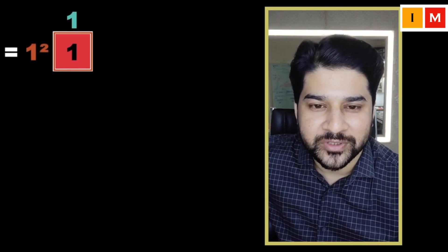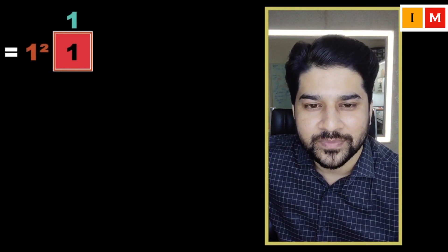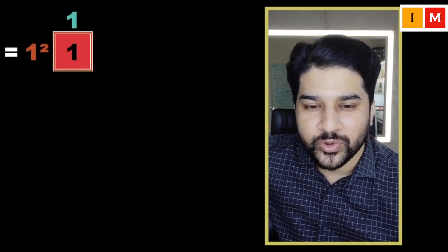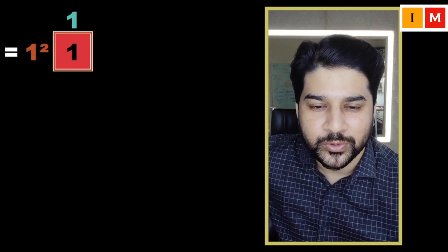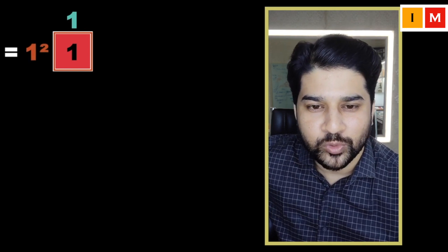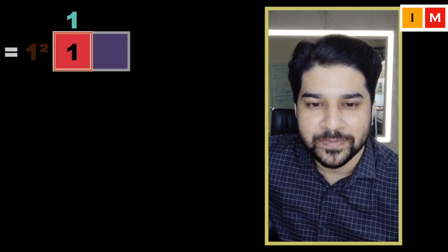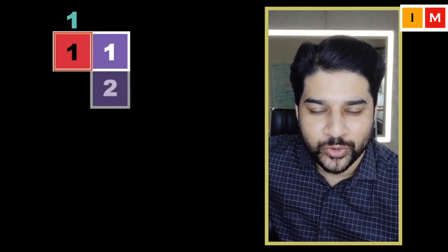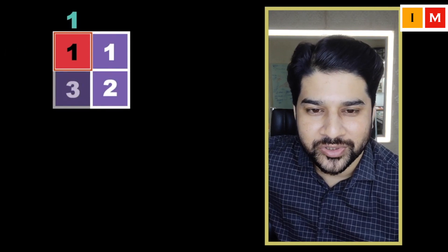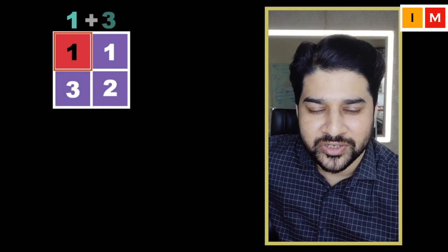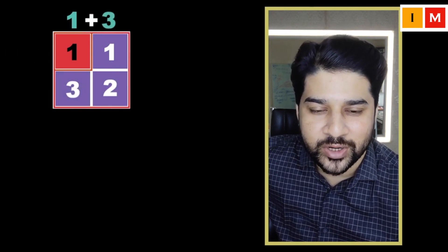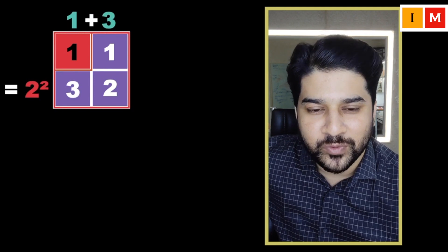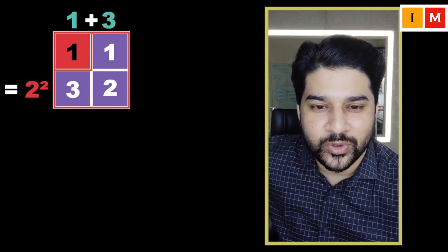Now we want to build a bigger square of 2 by 2, so we'll be needing more such unit squares. Let's see: 1, 2, 3 — so we needed 3 more squares to build a bigger square of 2 by 2.